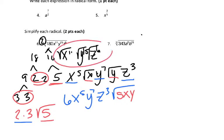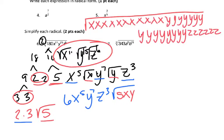The other way to do this part is list out all the variables. We then can group them in groups of 2. So we have 5 groups of x's with 1 left over. 1, 2, 3, 4, 5, 6, 7 groups of y's with 1 left over. And then 3 groups of z's. So all the groups come outside and everything left stays inside.